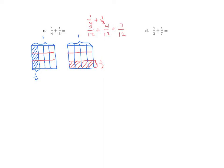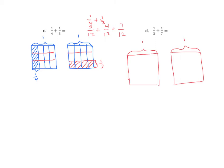Let's look at the next one. We'll make our two rectangles, each bracketed as one whole. The first addend is one-third, so I'm going to use two vertical lines and shade in one part — labeled one-third. For the second one, I'm going to represent one-seventh using horizontal lines. Since my denominator is seven, I need to make six horizontal lines.